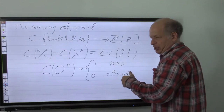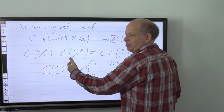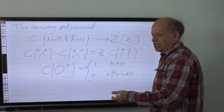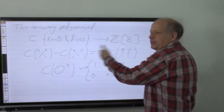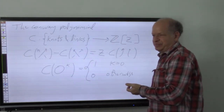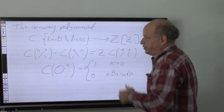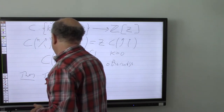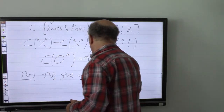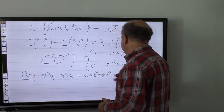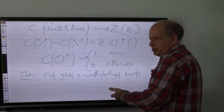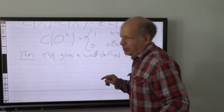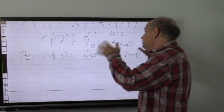This means the Conway polynomial is unique, but it doesn't yet mean it's well-defined — it's possible that two different ways of reducing a complicated link to the unknot give different answers. It is actually a non-trivial theorem that this invariant is well-defined. Maybe one day we'll return to the theorem, because there's a lot to say about it and it's the tip of a huge iceberg.